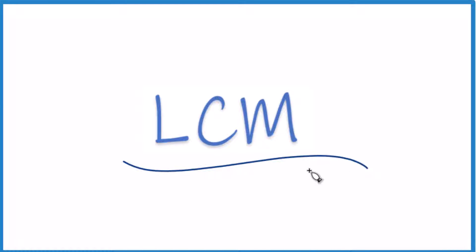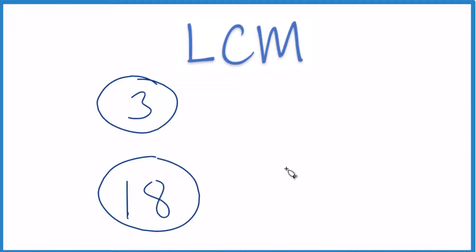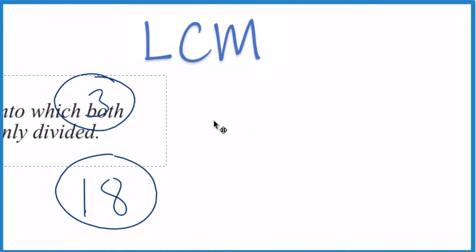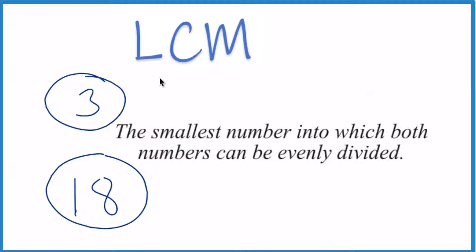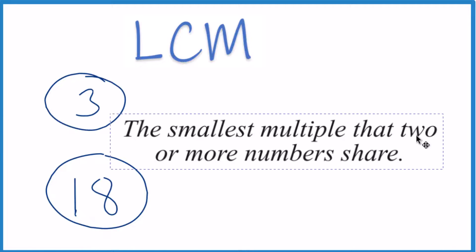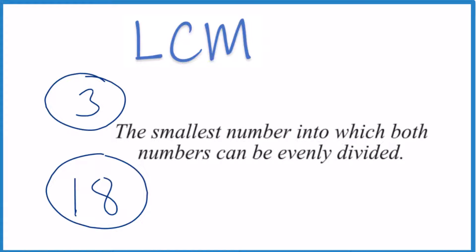Here's how you find the LCM, the least common multiple for 3 and 18. When we talk about the least common multiple, the LCM, you can think about it as the smallest number which both numbers can be evenly divided into. 3 and 18 go into the smallest number evenly. Another way to think about it is it's the smallest multiple that both of these numbers share.